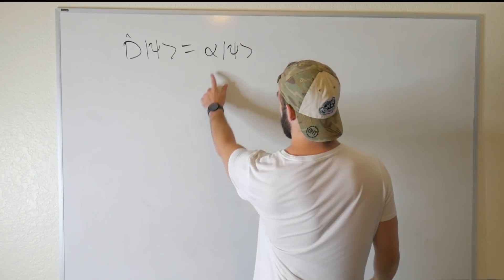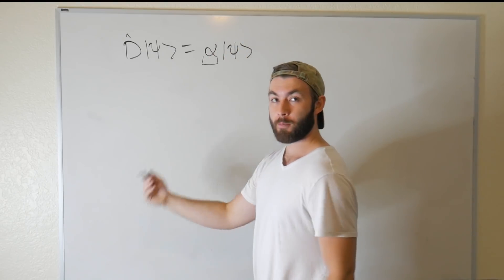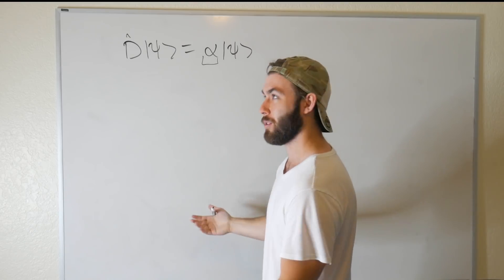So the goal of today is to show that this little fella is always going to be real, assuming that D is a Hermitian operator, meaning that it's equal to its Hermitian conjugate, or adjoint, whatever you want to call it.